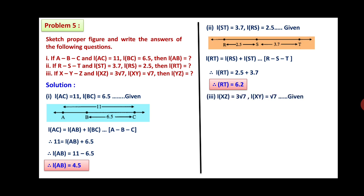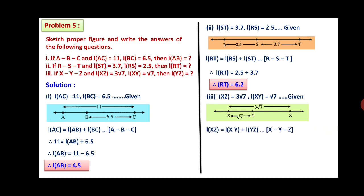Number 3: if X, Y, Z is the betweenness, L(XZ) equals 3√7 and L(XY) equals √7, find L(YZ). L(XZ) equals L(XY) plus L(YZ). Therefore, L(YZ) equals 3√7 minus √7. Therefore, L(YZ) is equal to 2√7.